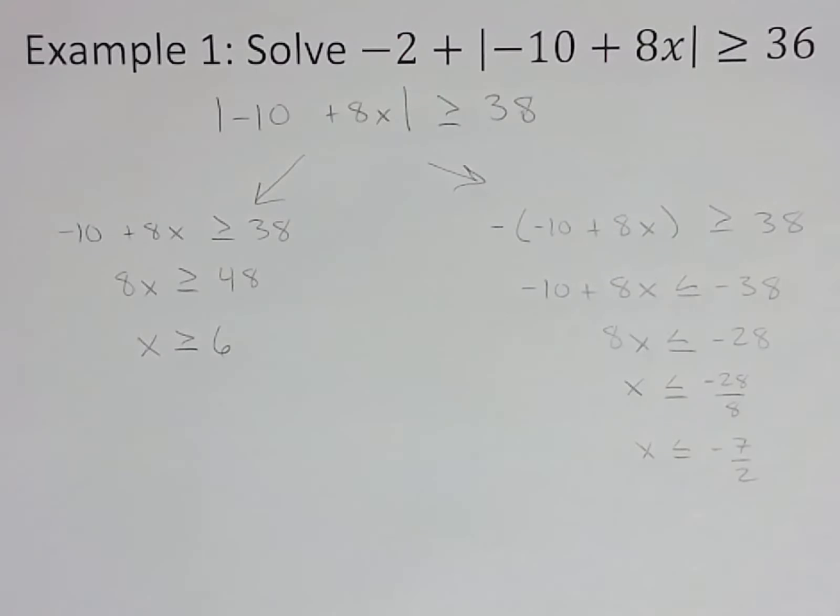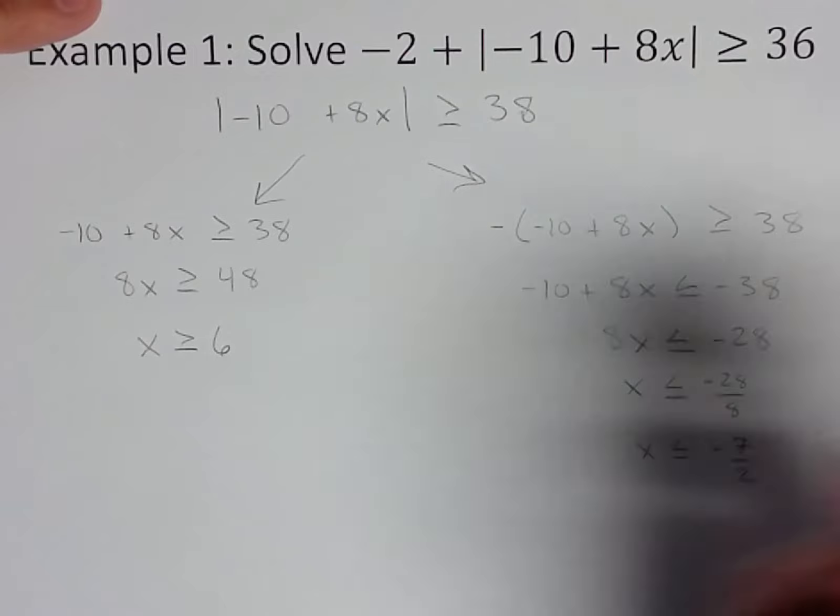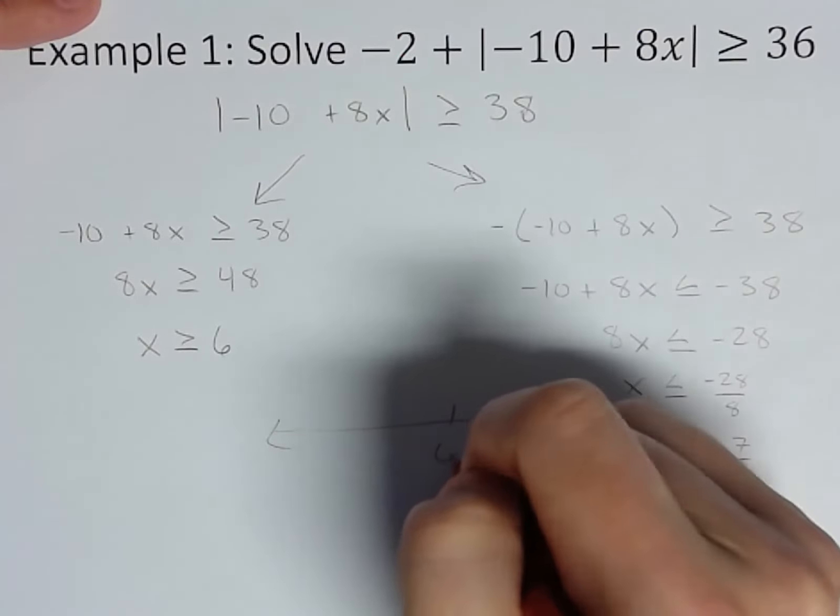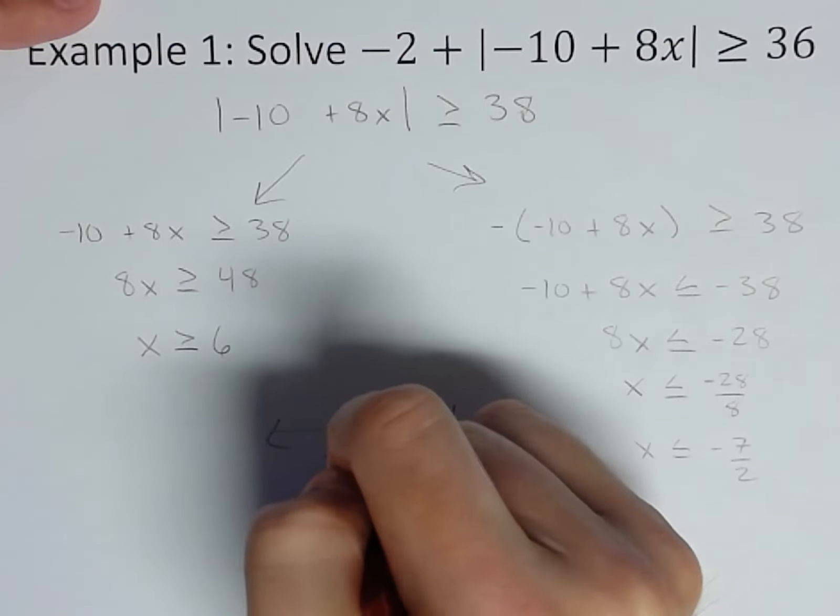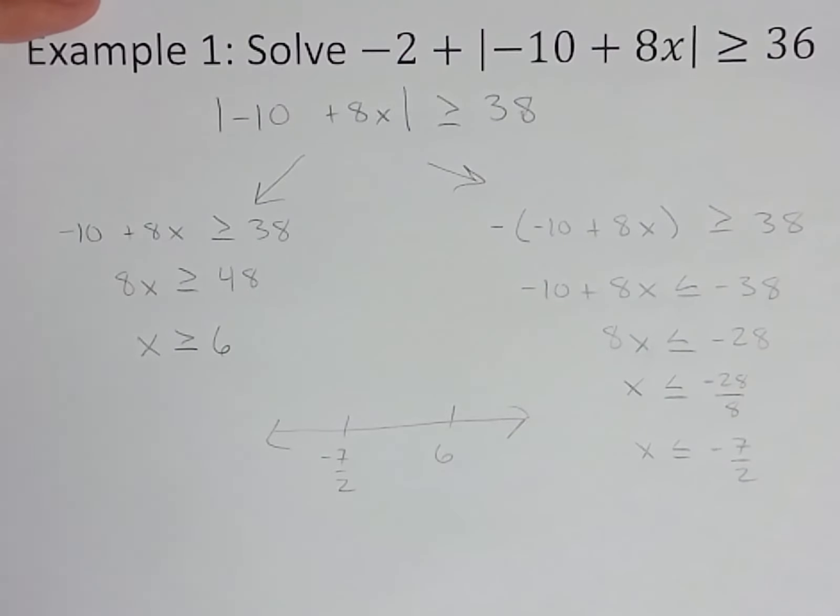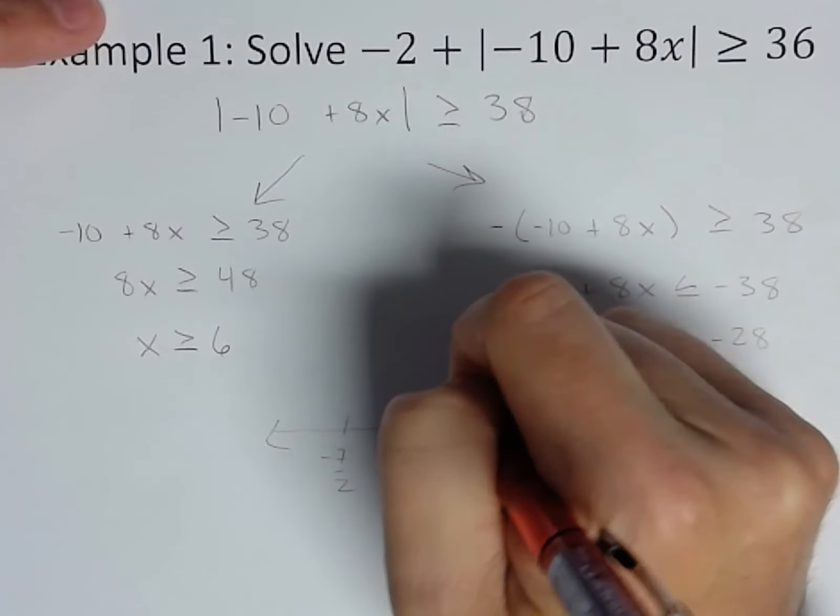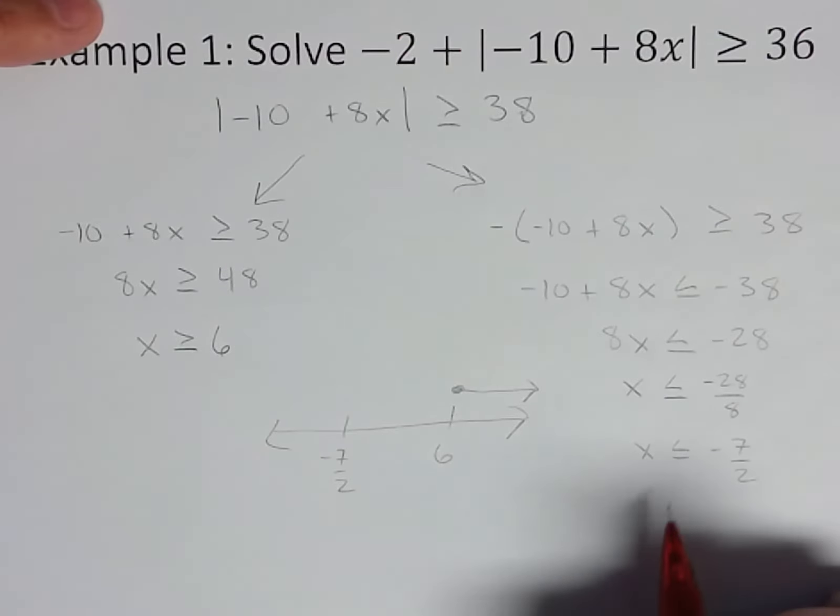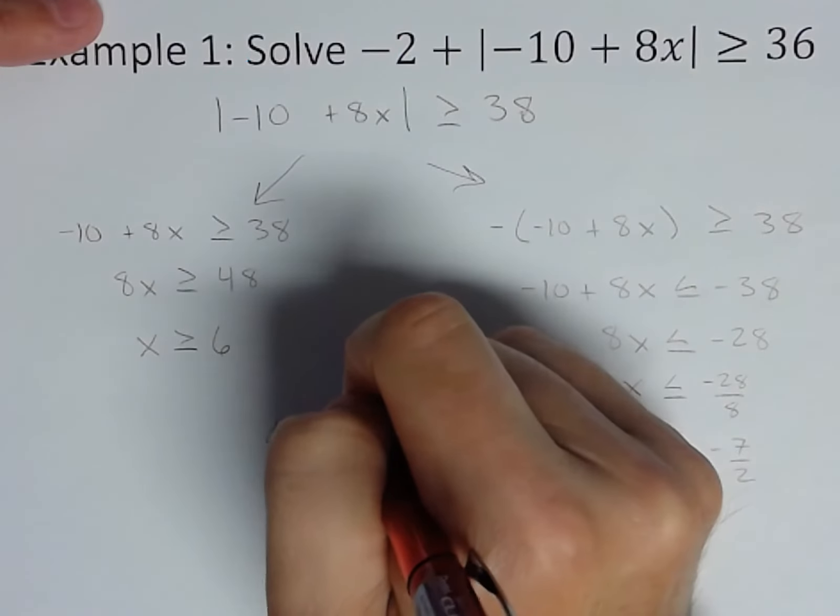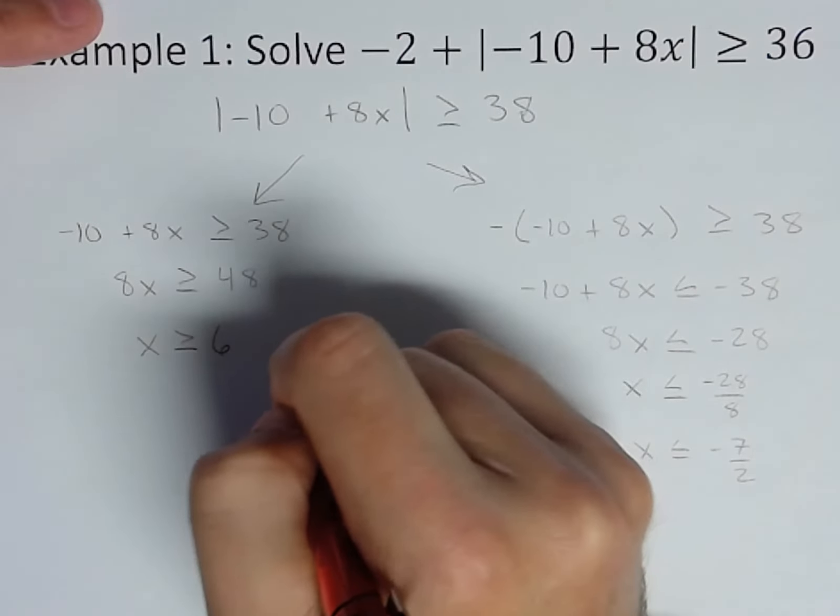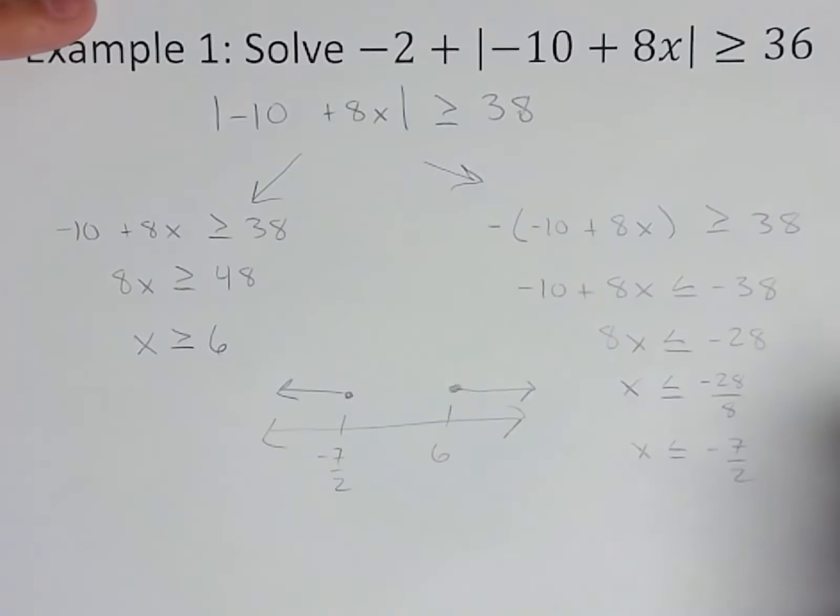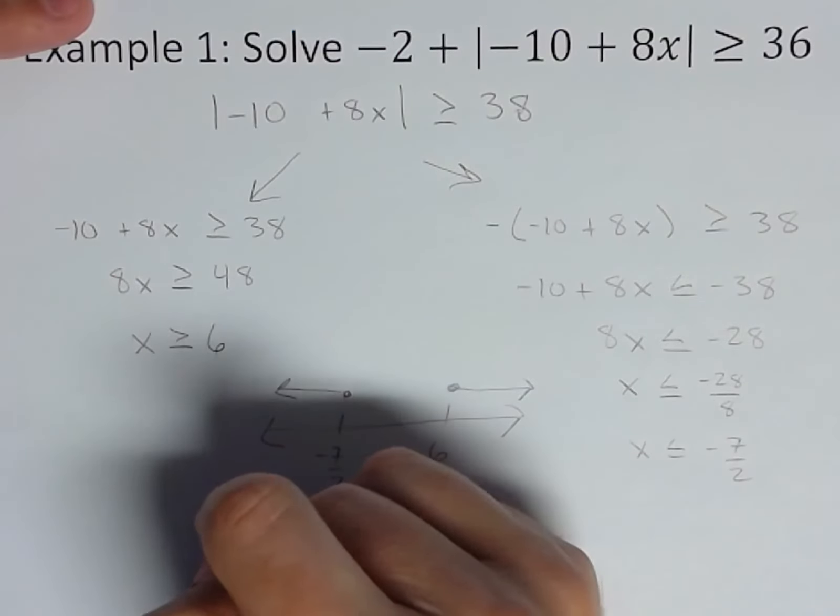We're not quite done. We want to write these answers with interval notation. I like to just do a quick sketch to picture what's going on. Greater than or equal to 6, that would be everything that direction. Less than or equal to negative 7 halves, that would be everything this direction. That tells me I've got a union, so I've got all this stuff and all of this stuff.